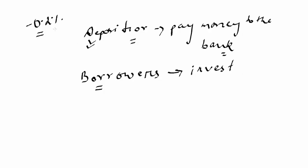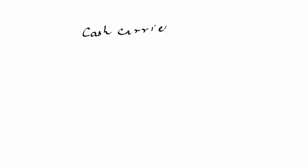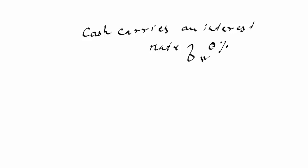However, there is a drawback to negative interest rate policy. When there is a negative interest rate, depositors will try to take money out of the banks and stuff it in their mattresses, because cash carries an implicit interest rate of 0%. So why would they pay money to the bank? When negative interest rates apply, depositors will take out the money and hold it.